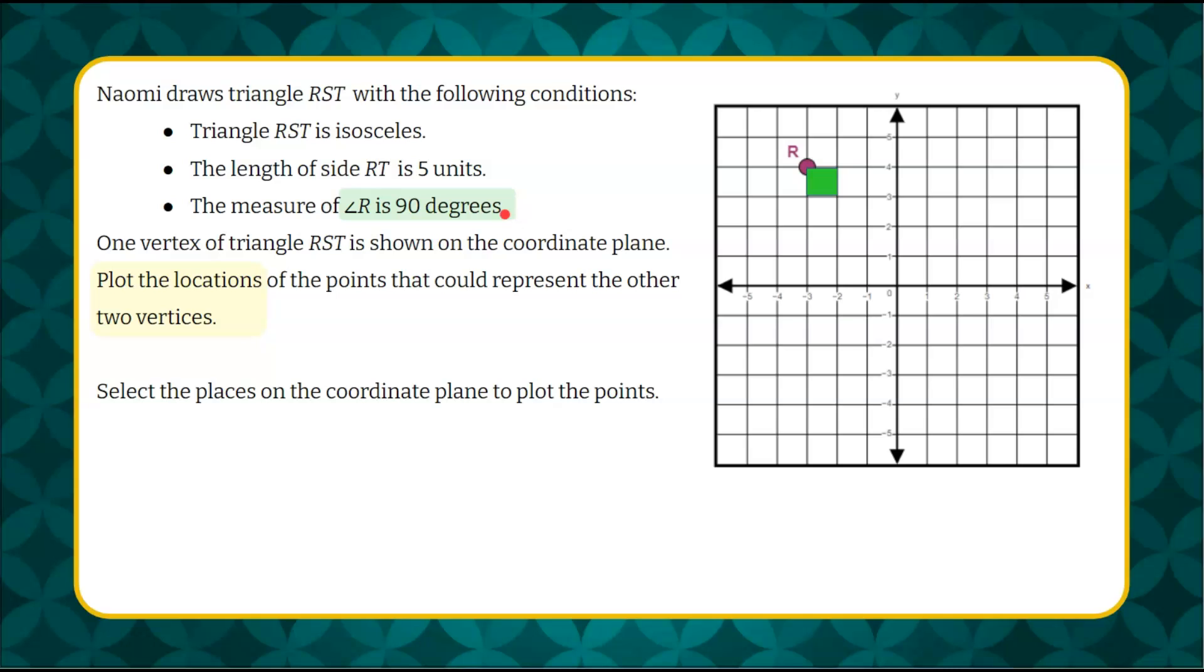So I'm going to start by noting that. The next thing I see is that side RT is 5 units. So I'm going to start at R, and I'm going to go 5 units to the right and plot a point.